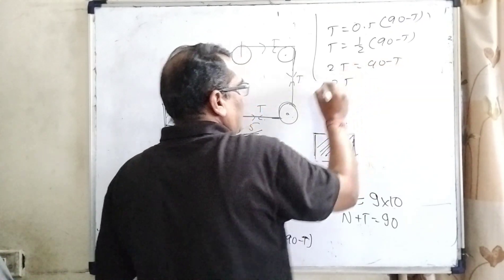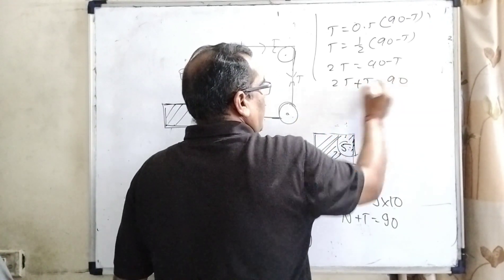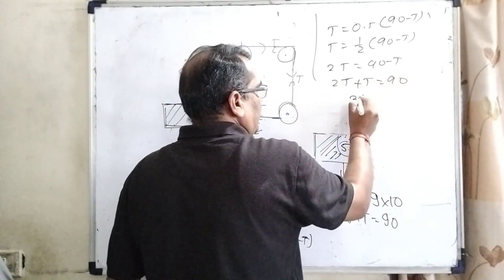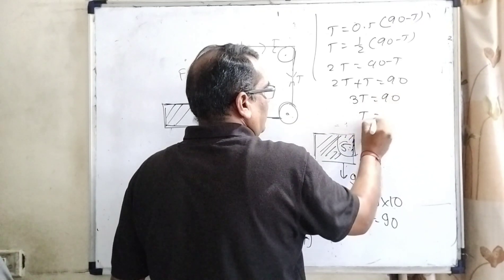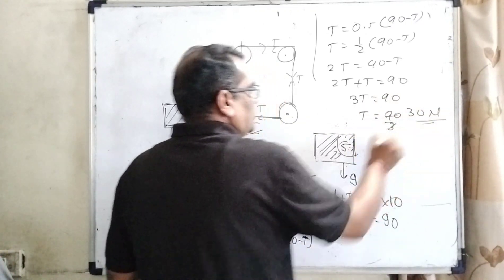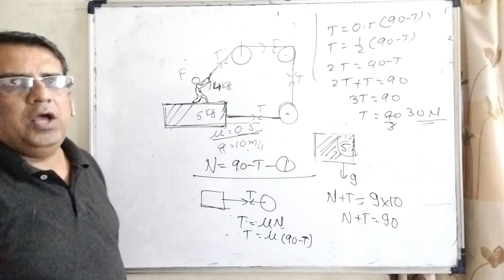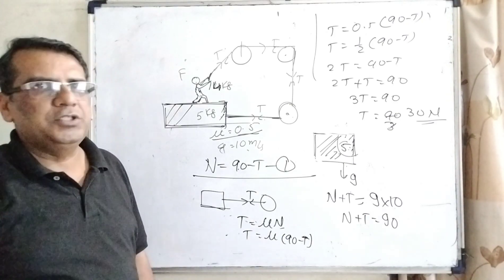Transposing this minus T to the left side becomes positive, plus T equal to 90. Then 2T plus T is 3T equal to 90, then T equal to 90 by 3, means 30 Newton. So here 30 Newton may apply and body does not move. So I hope you understood this situation.